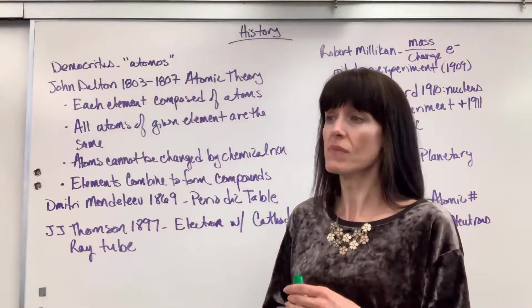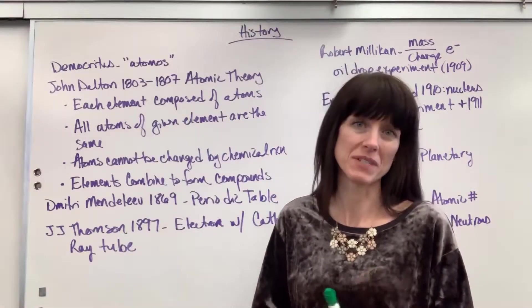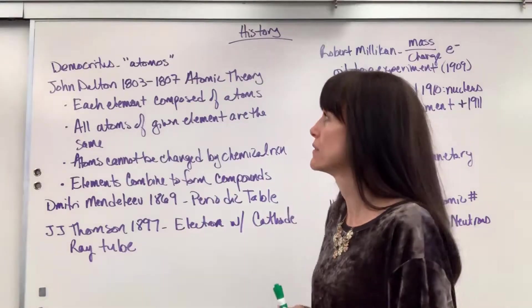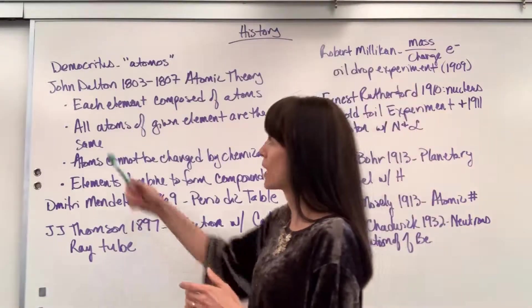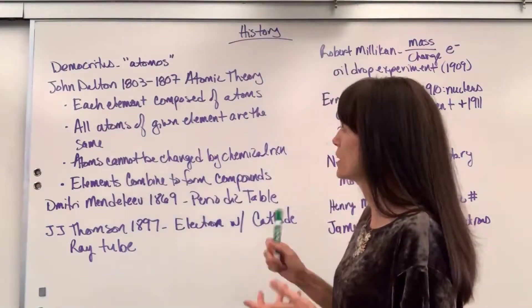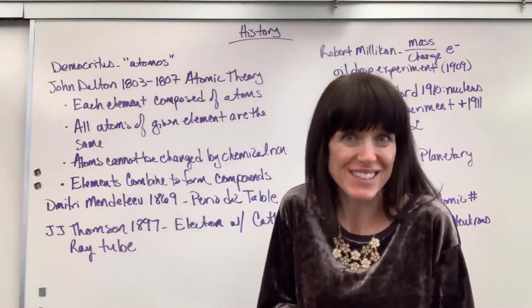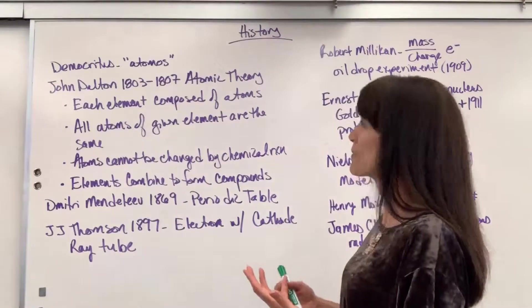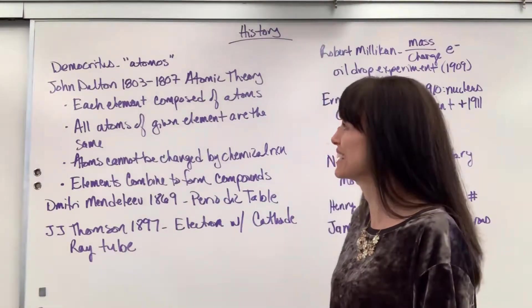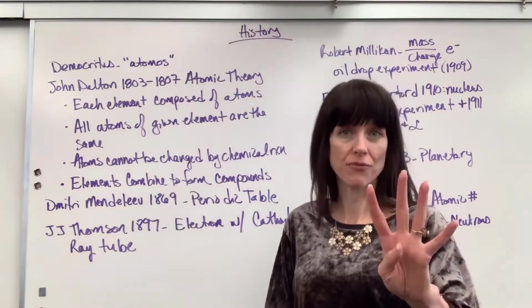He was a philosopher. He didn't use scientific experimentation to prove that. Scientific experimentation didn't come until John Dalton. This is between 1803 and 1807. He was a school teacher in England, and he came up with the atomic theory. In the atomic theory, he gave four postulates.